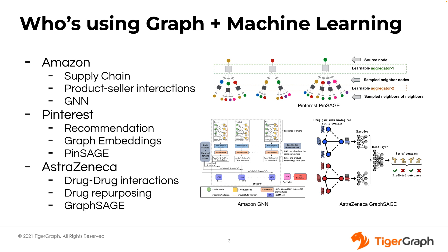Additionally, the drug company AstraZeneca is using graph neural networks to look at drug-to-drug interactions — how drugs interact within the complex systems of the human body, interacting with different proteins, people with different diseases across different age groups and demographics. All those different things can have effects on how these drugs interact, so we need to keep track of all of that in a data structure, and graph works great for that. Being able to feed that graph data into a machine learning model will give AstraZeneca better results when looking at drug-to-drug interactions and other drug-related use cases.